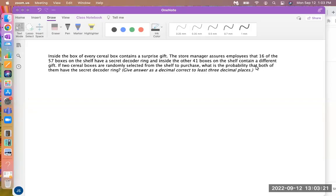Inside the box of every cereal box contains a surprise gift. The store manager assures employees that 16 of the 57 boxes on the shelf have a secret decoder ring, and inside the 41 boxes on the shelf contain a different gift. If two cereal boxes are randomly selected from the shelf to purchase, what is the probability that both will have a decoder ring?